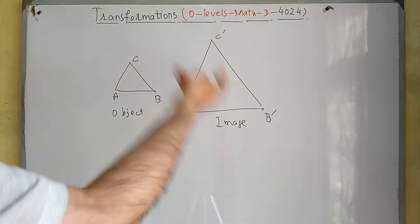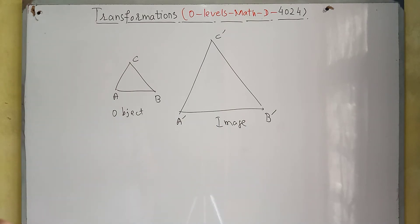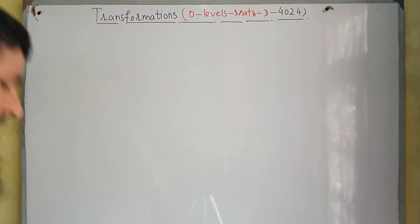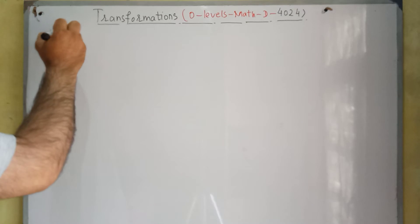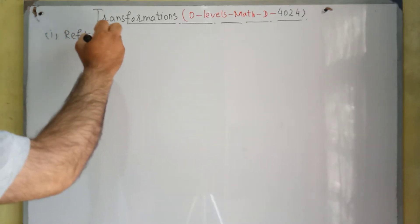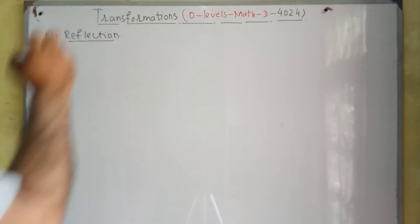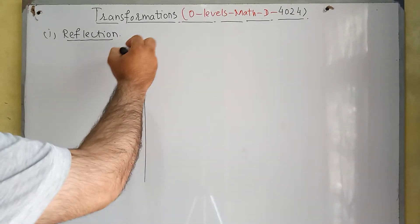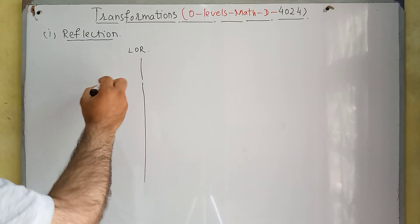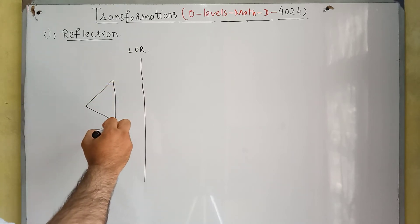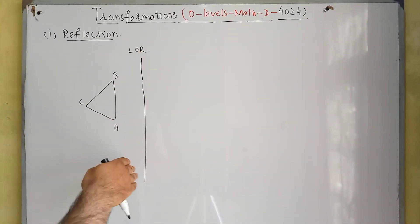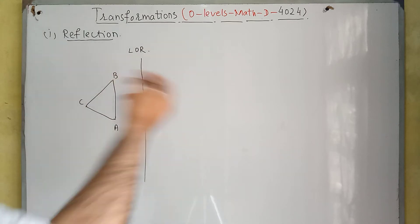This is basically a transformation from this triangle to this triangle. We have different types of transformations. We are going to start from reflection — this is the first type of transformation. In reflection, we will have a line of reflection about which we will reflect any shape. For example, this is a straight line — this is our line of reflection. If we reflect this triangle ABC along this line of reflection, we will have another triangle at this side.